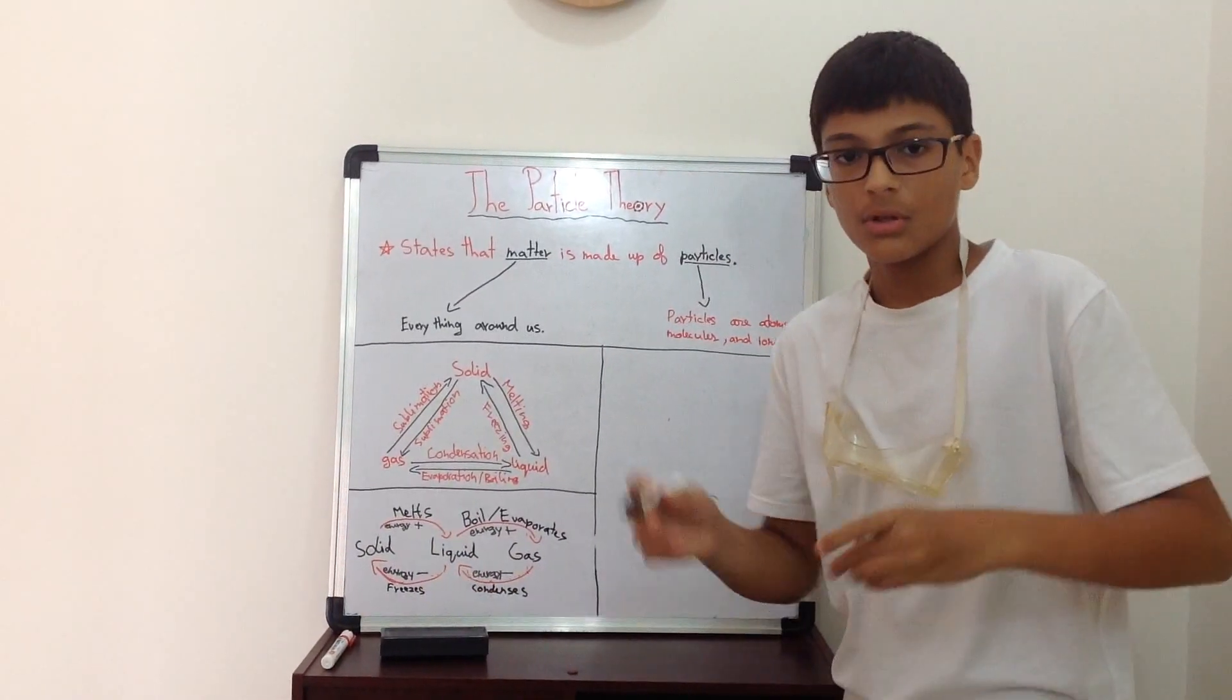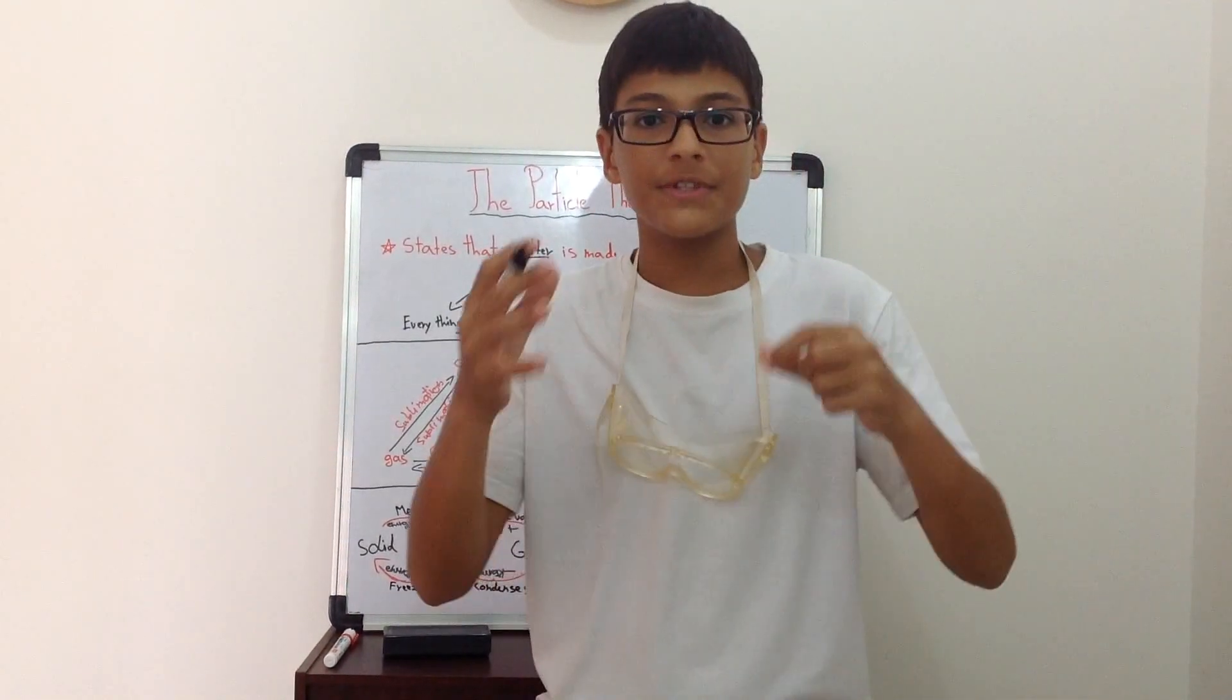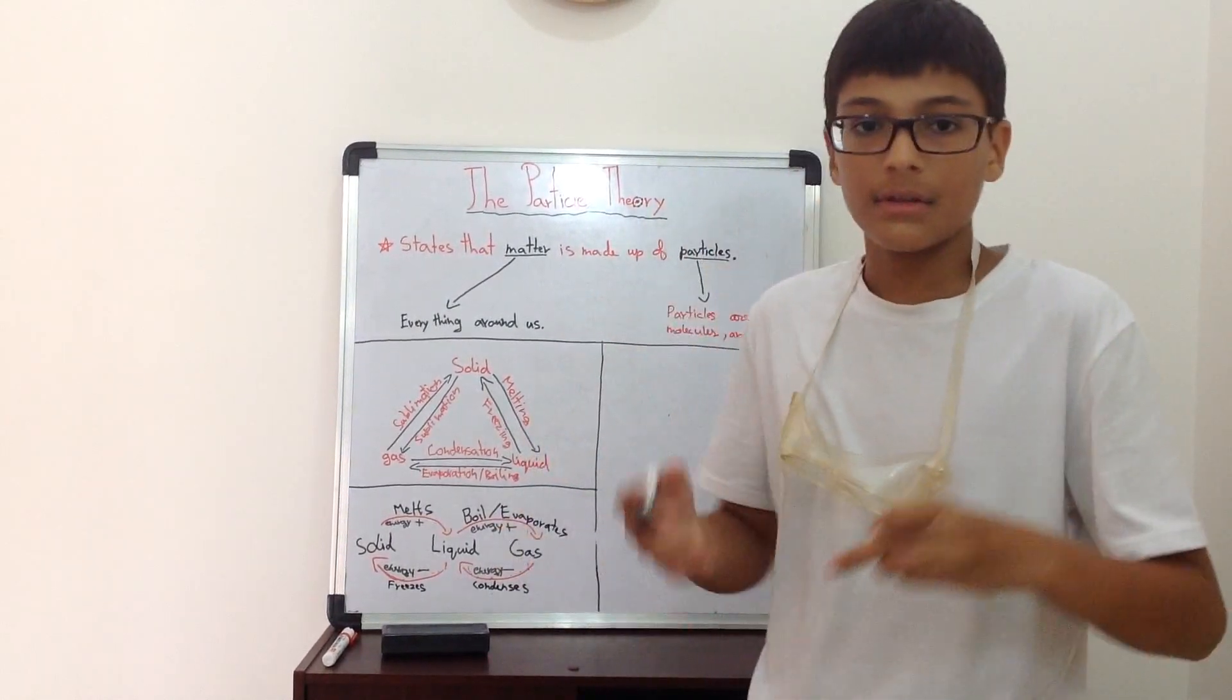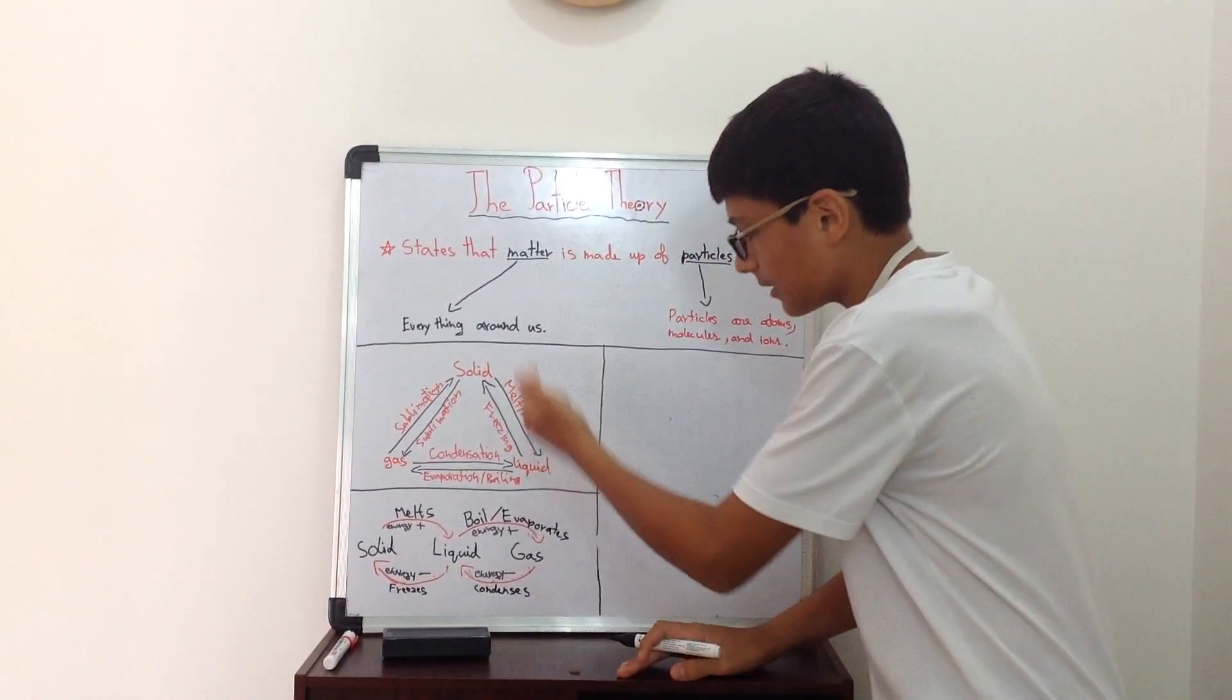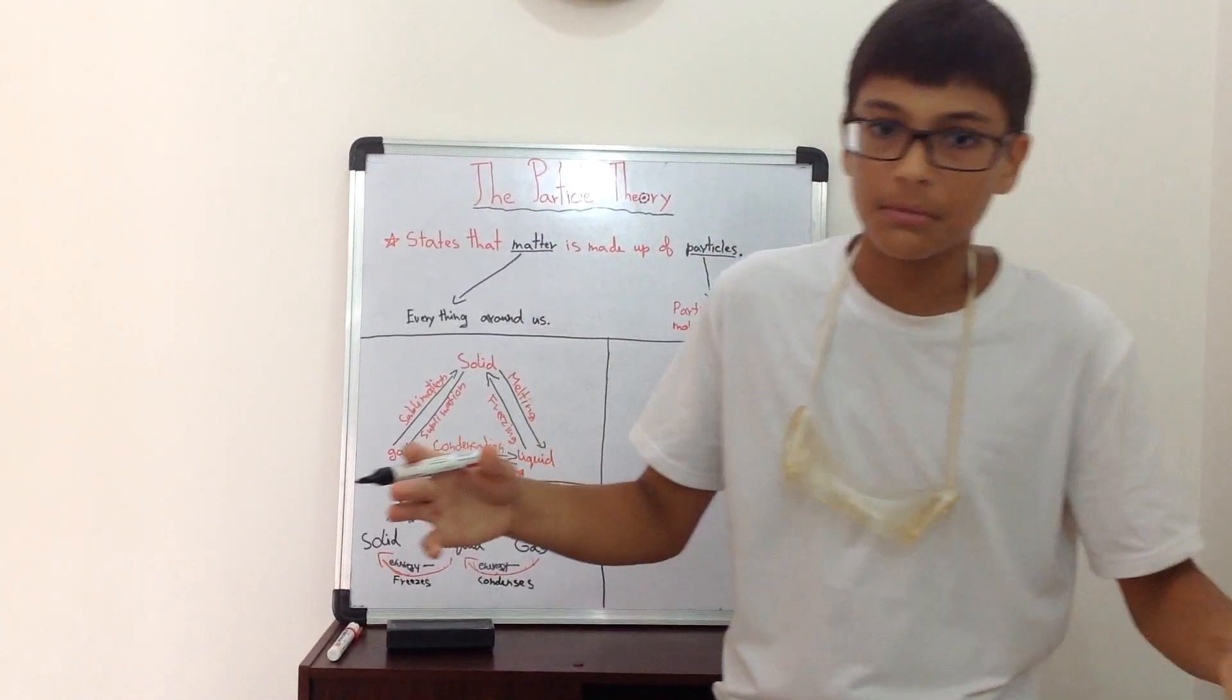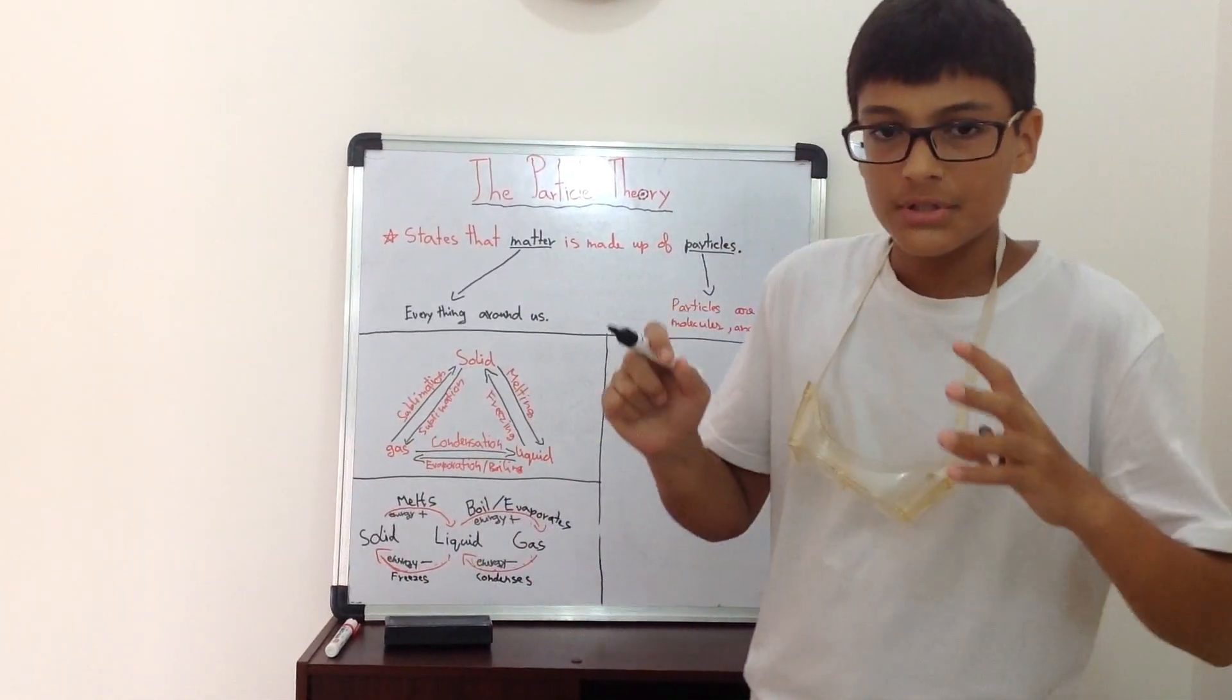Let's move on to how they correlate with physical changes. Physical changes are reversible changes, and examples of those will be melting, freezing, condensing, evaporation, sublimation, and so on. So now let's first start with melting.